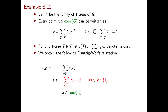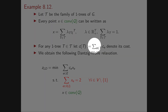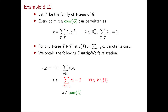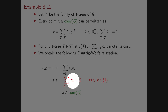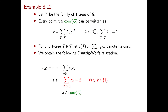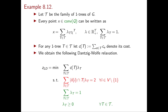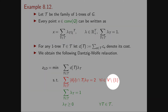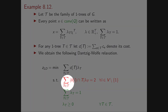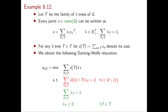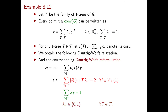For every 1-tree T, let c(T) denote the cost of the corresponding 1-tree. We replace the x variables with the convex combination formula, and replace x ∈ conv(Q) with Σλ_T = 1, λ_T ≥ 0. The red degree constraints then take the form: for every node i and every 1-tree T, the sum of x_e over e in δ(i) equals the cardinality of δ(i) ∩ T. To obtain the Dantzig-Wolfe reformulation, we simply replace λ_T ≥ 0 with λ_T binary for every T in T.